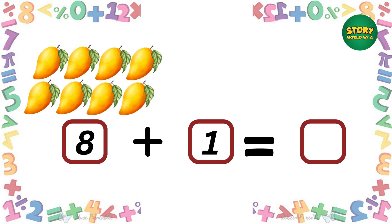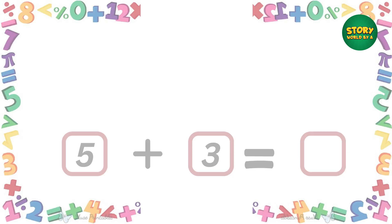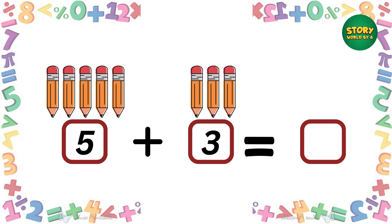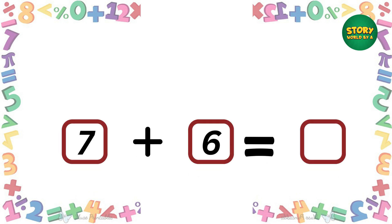Let's try another one. We have eight mangoes — if we add one more mango, how many do we have? That's right, we have nine mangoes! We have five pencils — if we add three more pencils, how many do we have? Great, we have eight pencils!